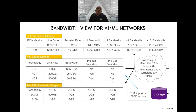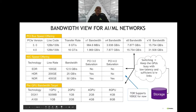EDR at 100 Gbps, HDR at 200 Gbps, and NDR at 400 Gbps all relate to the PCI bus bandwidth. As line rate increases, they will saturate PCIe 3.0, requiring a move to PCIe 4.0. This slide helps relate what nodes can do in terms of PCI standards, associated NIC bandwidth, and GPU expectations when operating the cluster.